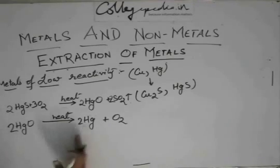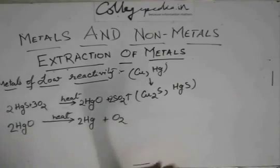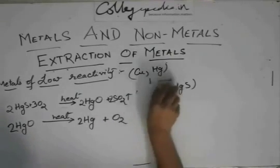Hg is obtained very simply by just heating, and similarly with copper sulphide.